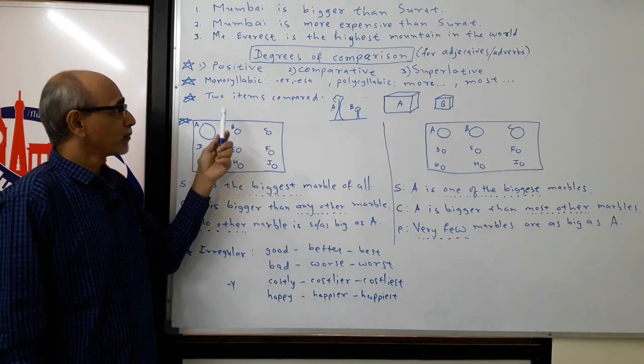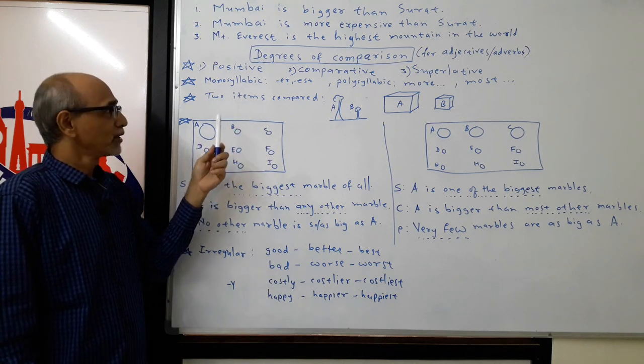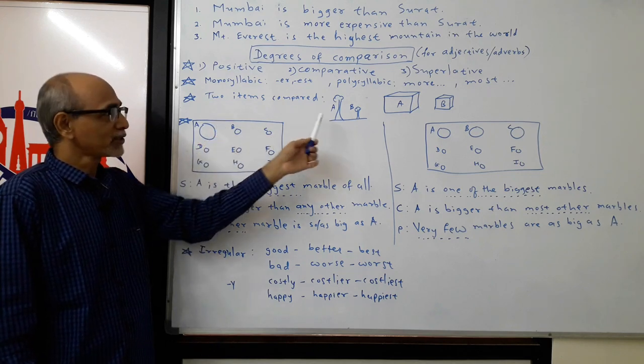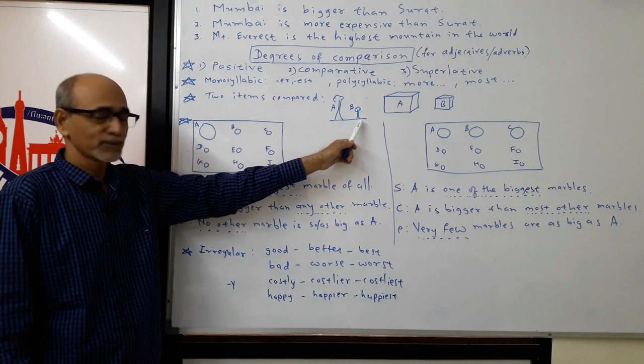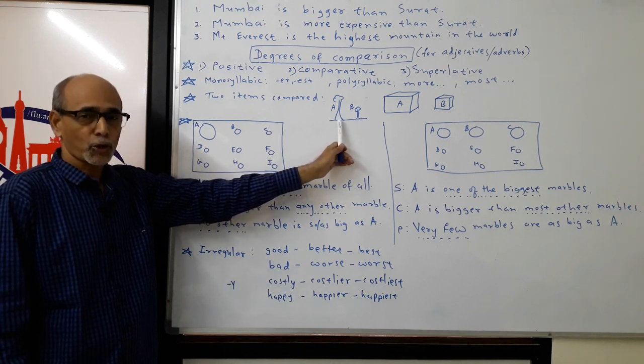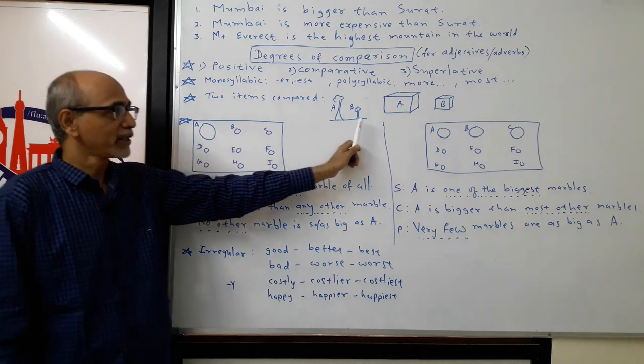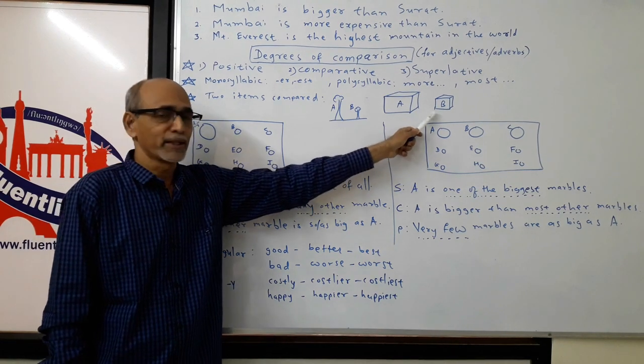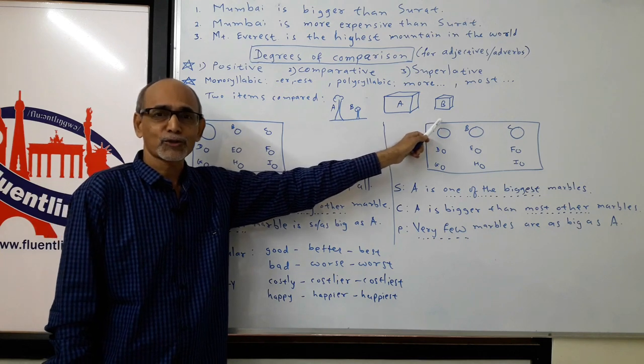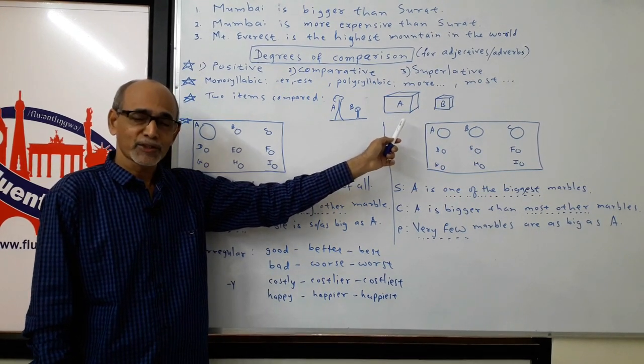With that background, let's try to understand actual comparisons. Suppose there are two items compared, only two items. For example, here there are two trees and you can clearly see that tree A is taller than tree B. Similarly, here you can see two boxes A and B. Box A is bigger than box B.